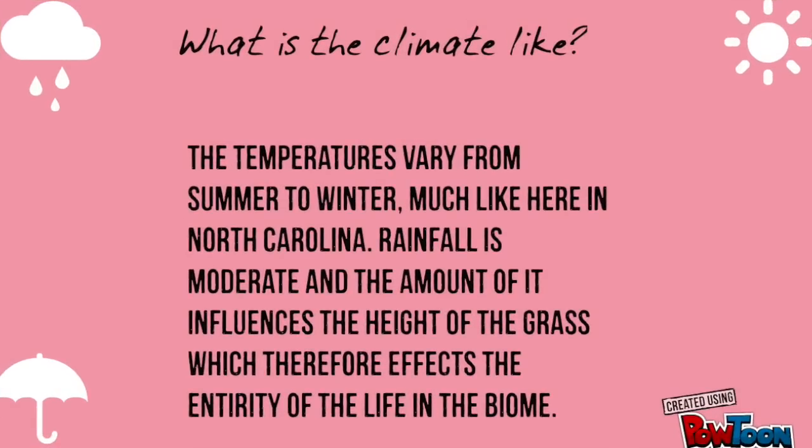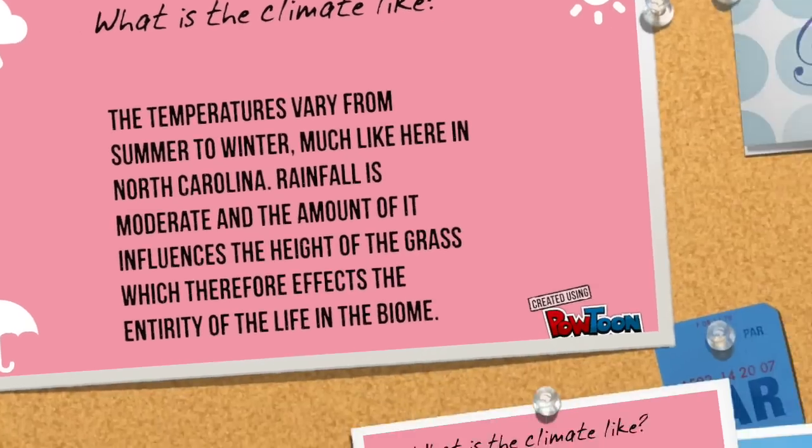Now let me tell you what the climate is like. The temperatures vary from summer to winter much like here in North Carolina. Rainfall is moderate and the amount of it influences the height of the grass, which therefore affects the entirety of the life in the biome.